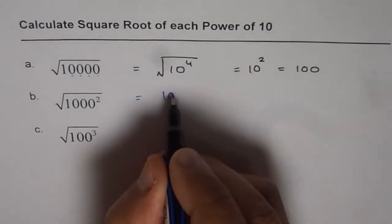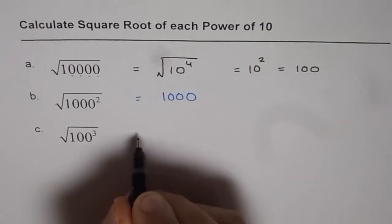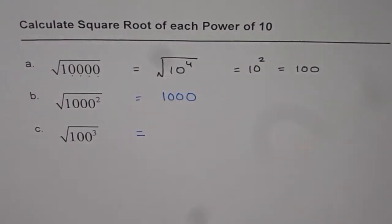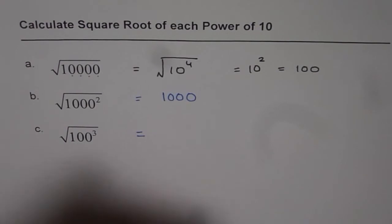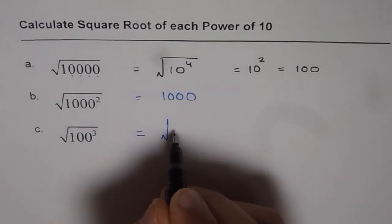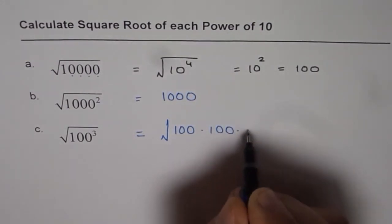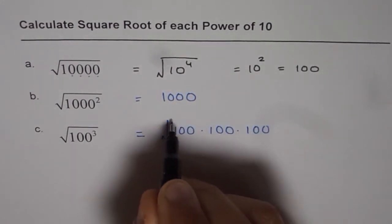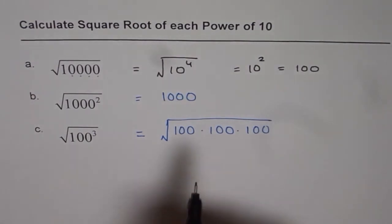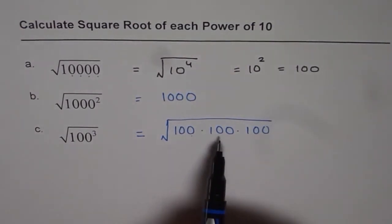In part c we have square root of hundred cubed. Let's expand: cube means we have hundred times hundred times hundred, that is hundred cubed. Now how many zeros are there? 1, 2, 3, 4, 5, 6. Half of 6 is 3, so we get thousand as our answer.